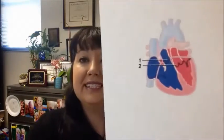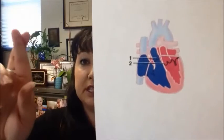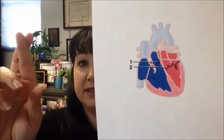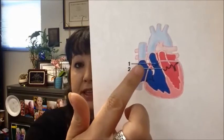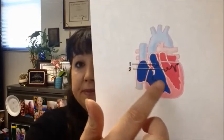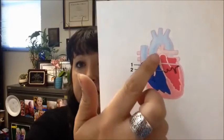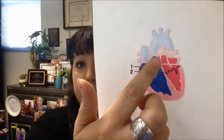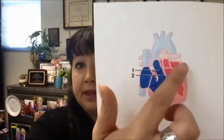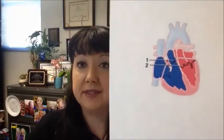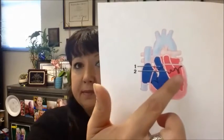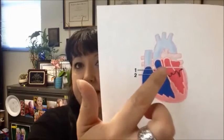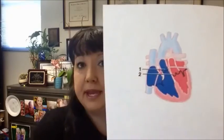Looking at the image of transposition of the great vessels, we can see the deoxygenated blood in the right atrium and right ventricle going into the aorta, and what's happening on the left side. We're going to need mixing — a VSD, an ASD, or a PDA.